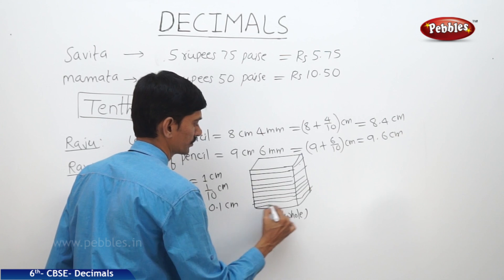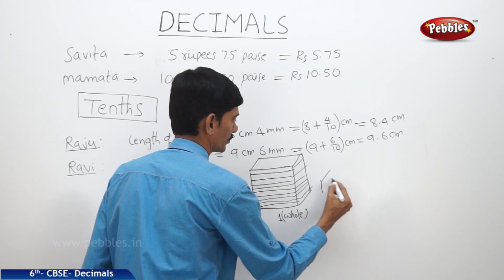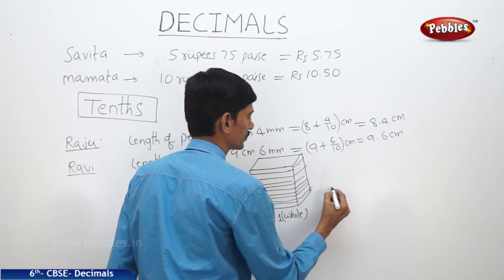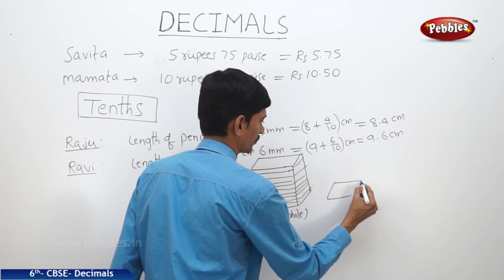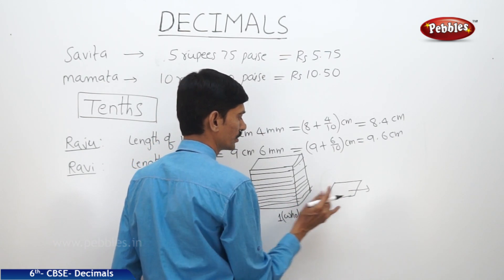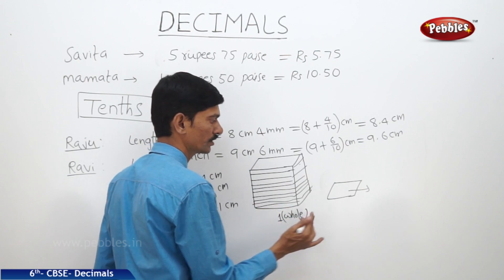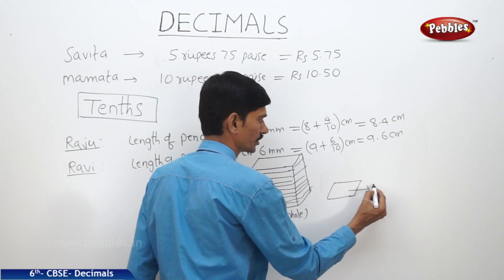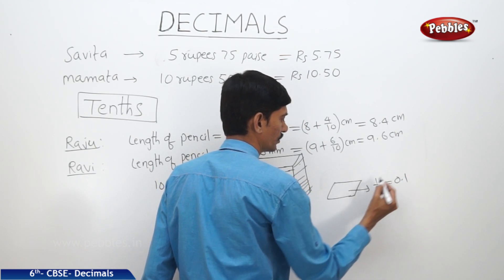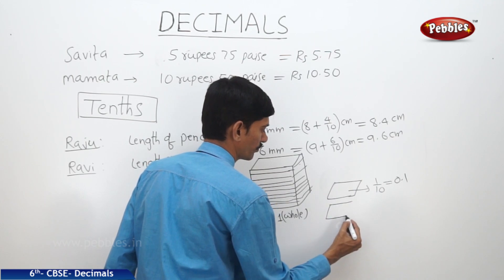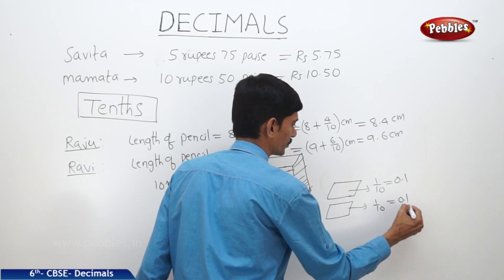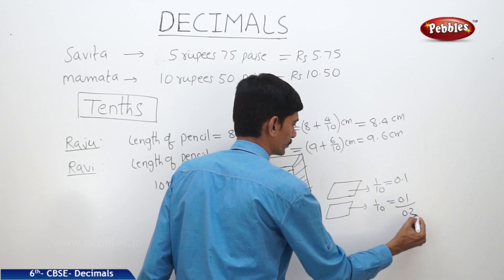The block is divided into ten equal parts. Each part represents one-tenth, written as one by ten or zero point one. If there are two parts, we have one-tenth plus one-tenth, which equals zero point two. So two parts represent two tenths, written as zero point two.